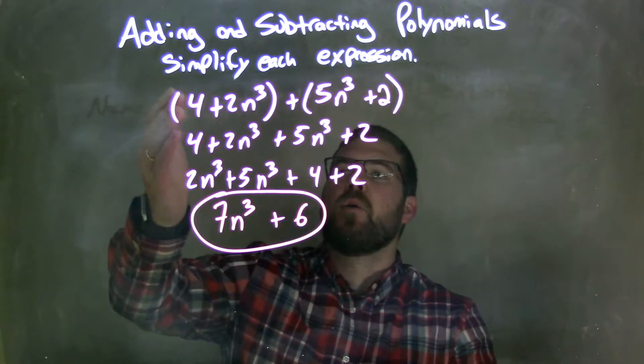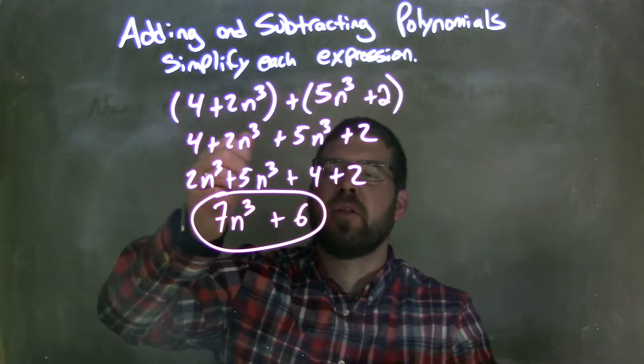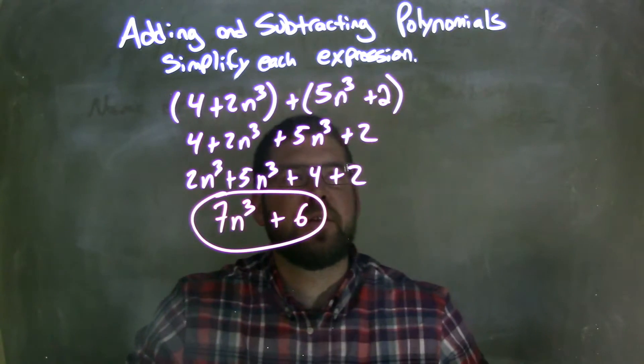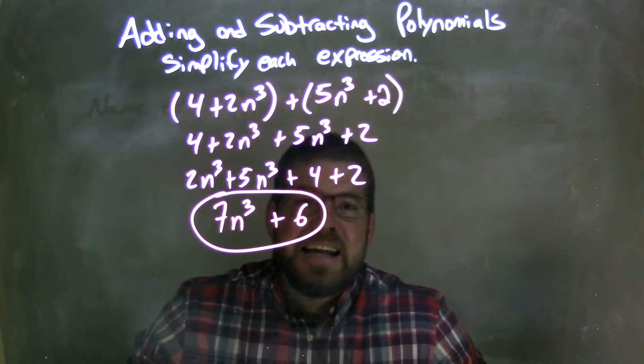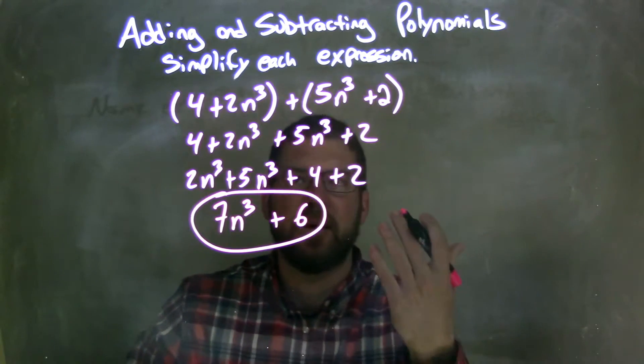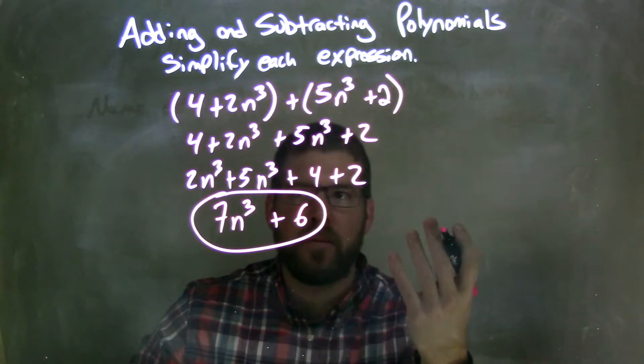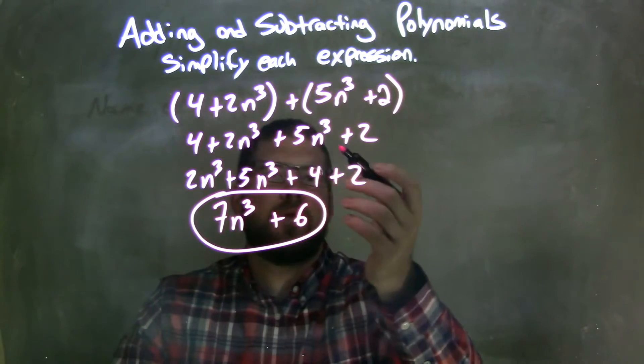So let's recap. We're given parentheses 4 plus 2n to the 3rd and parentheses plus parentheses 5n to the 3rd plus 2. Since they're all addition and inside each parentheses there's no simplification that we can do, I can just eliminate my parentheses now. So I was rewriting everything without parentheses.